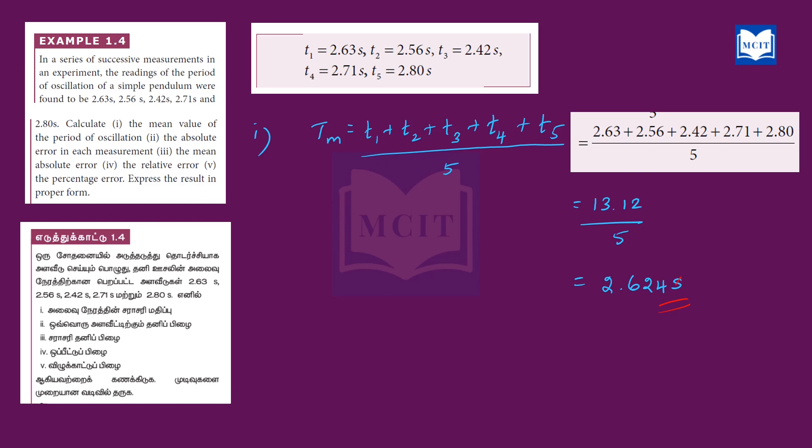Adding all the values and dividing by 5, we get 2.6245, which we round to tm equal to 2.62 seconds. This is the mean value — the first subdivision is complete.